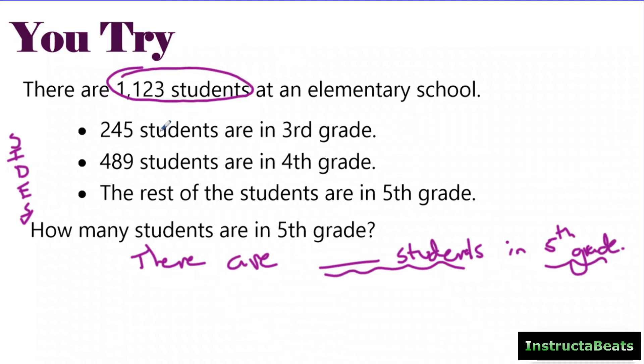So there are 1,123 students. Again, I'm not circling that because it's a number. I'm not being a number grabber. I'm circling it because it's about my statement. My statement's about students. I identify things about students.